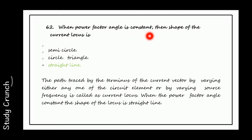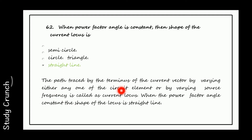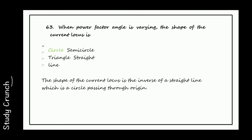Next, when the power factor angle is constant, what is the shape of the current locus? It is a straight line. The path traced by the terminus of the current vector by varying any circuit element or source frequency is called the current locus. When the power factor angle is constant, the shape of the locus is a straight line.